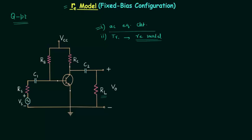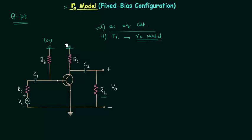In order to find out the AC equivalent circuit, all the DC sources must be short circuited. We have Vcc as the DC source, so we will short circuit Vcc. After this we will have the potential at this point equal to zero, and the potential at this point equal to zero. So we have ground at this terminal and ground at this terminal. Potential of ground is equal to zero volts. This is step number one in finding out the AC equivalent circuit.